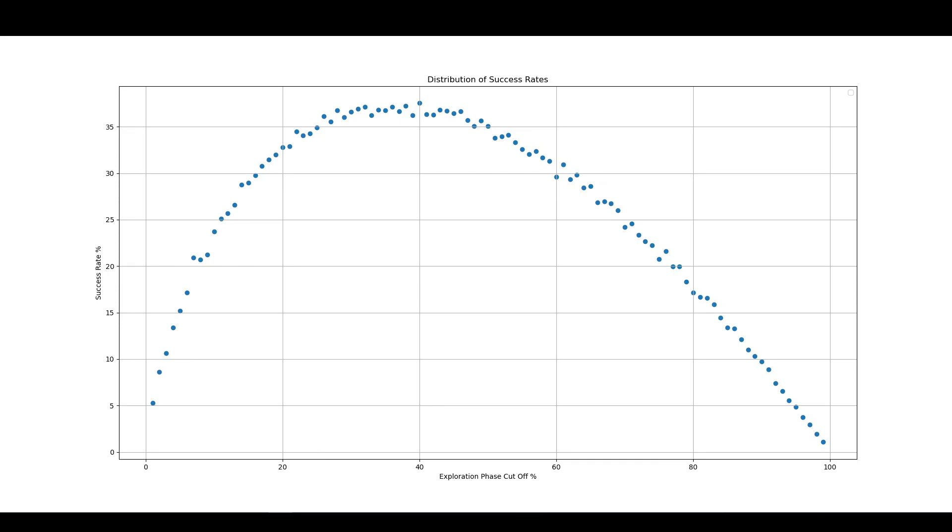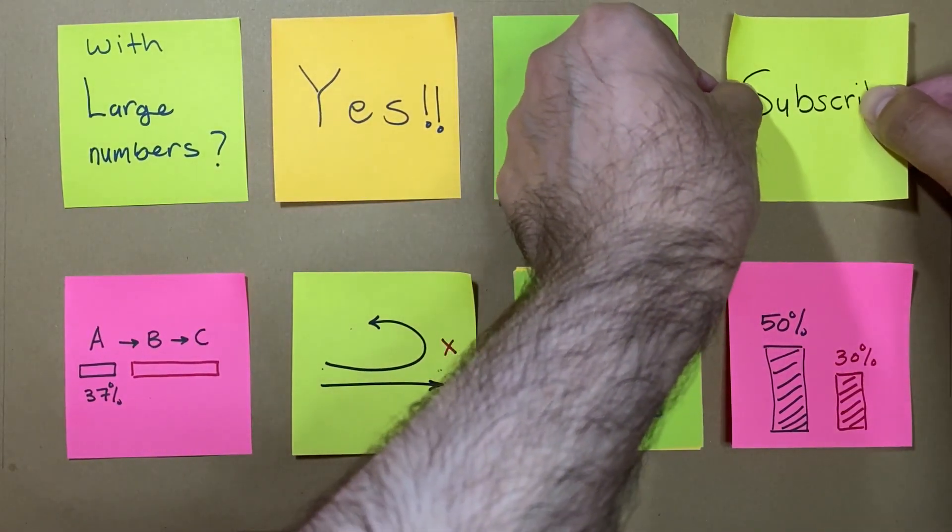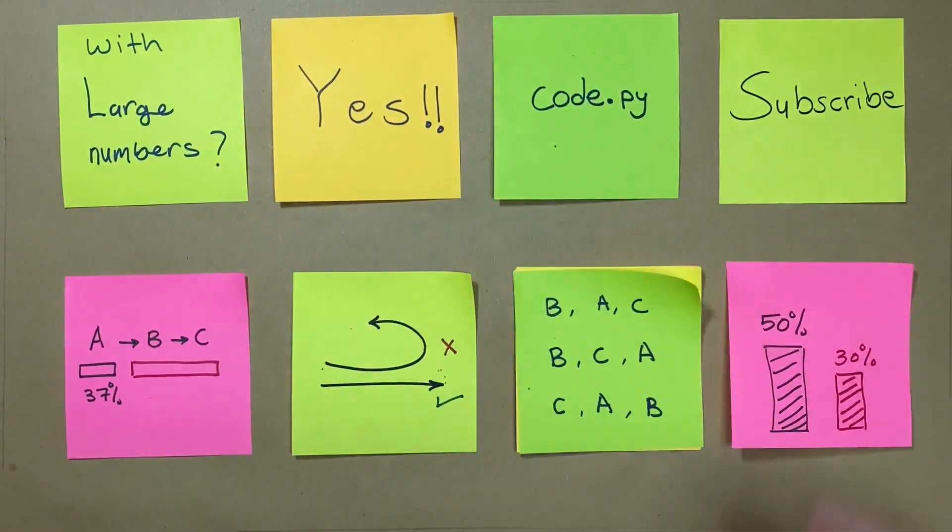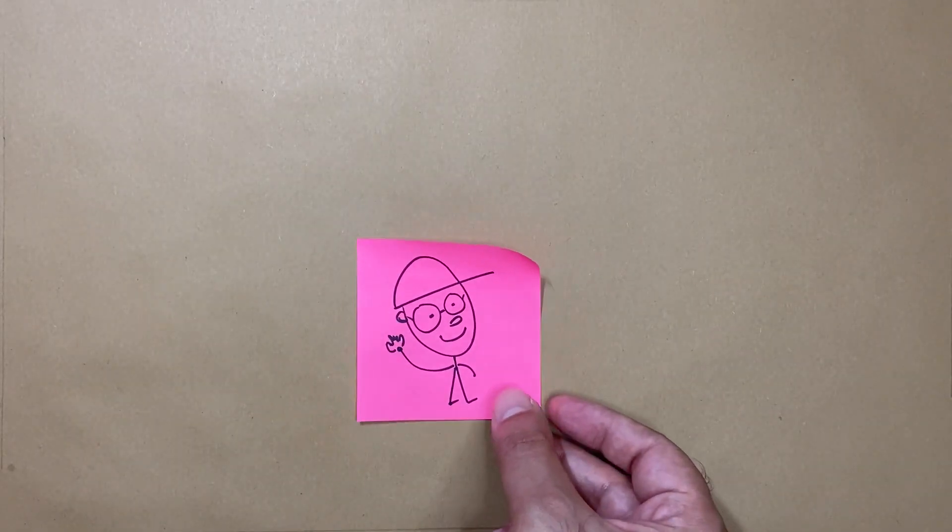And here's another example using 100 flats. We get a 37% success rate, the highest, at a cutoff of 37%. If you enjoy this content, hit that subscribe button and see you in a week's time. If not for me, just for Ted.